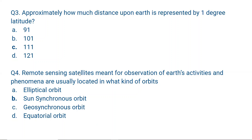Question number 4. Remote sensing satellites meant for observation of earth activities and phenomena are usually located in what kind of orbits? The correct answer is Sun Synchronous orbit. Sun Synchronous orbit is also called Polar orbit or Heliosynchronous orbit.